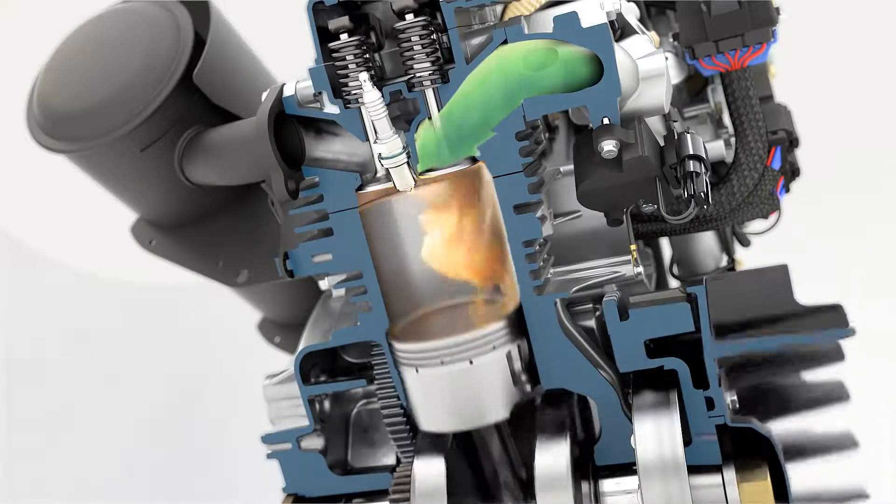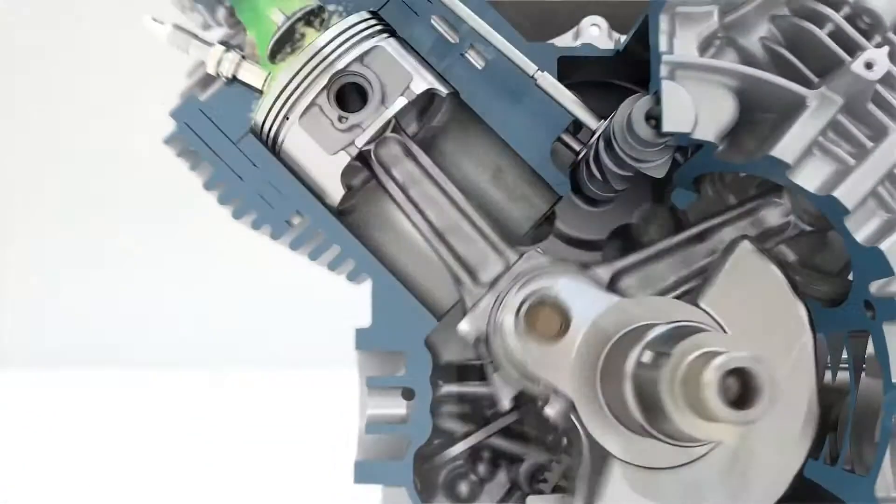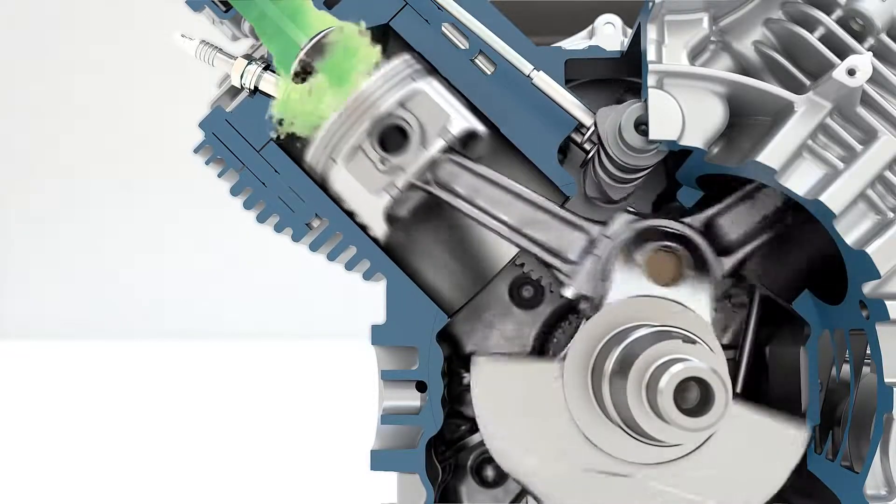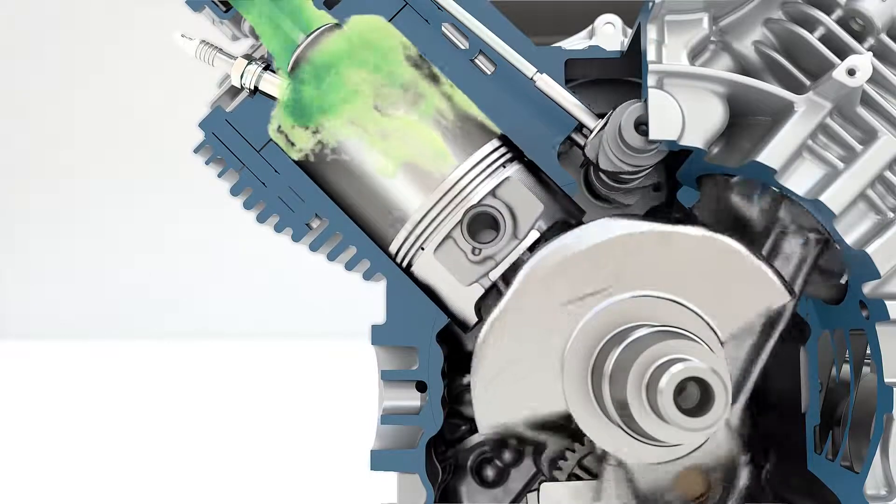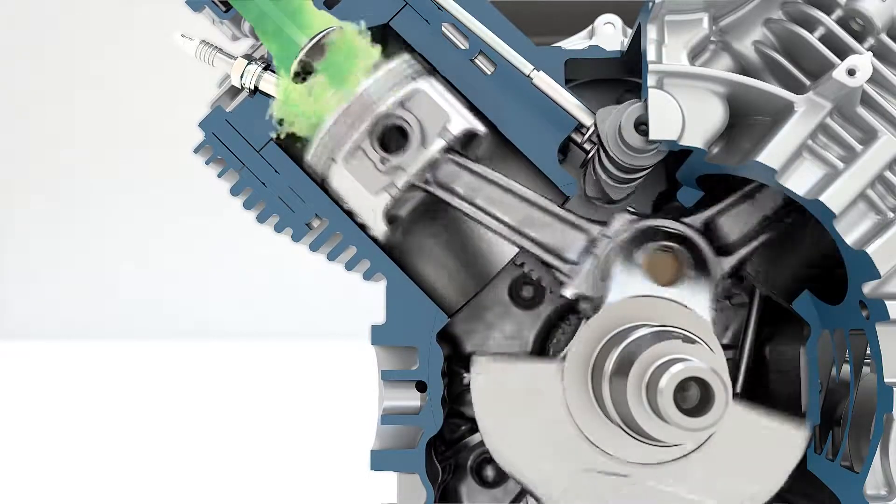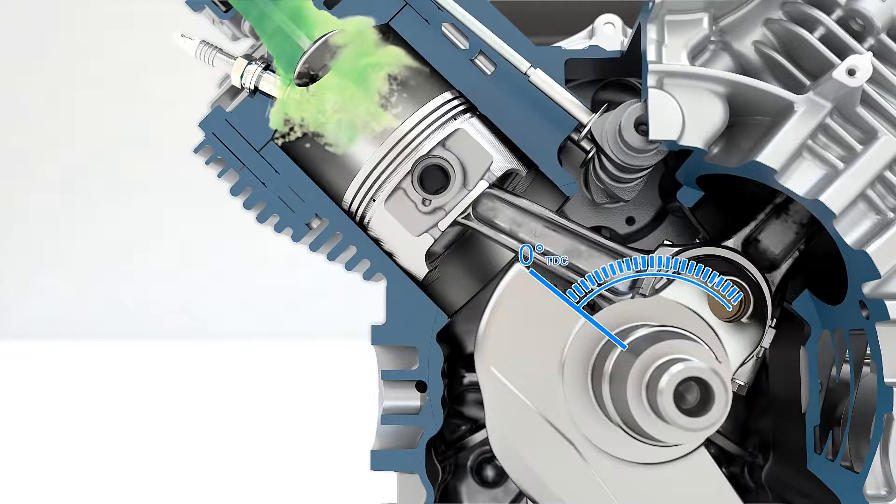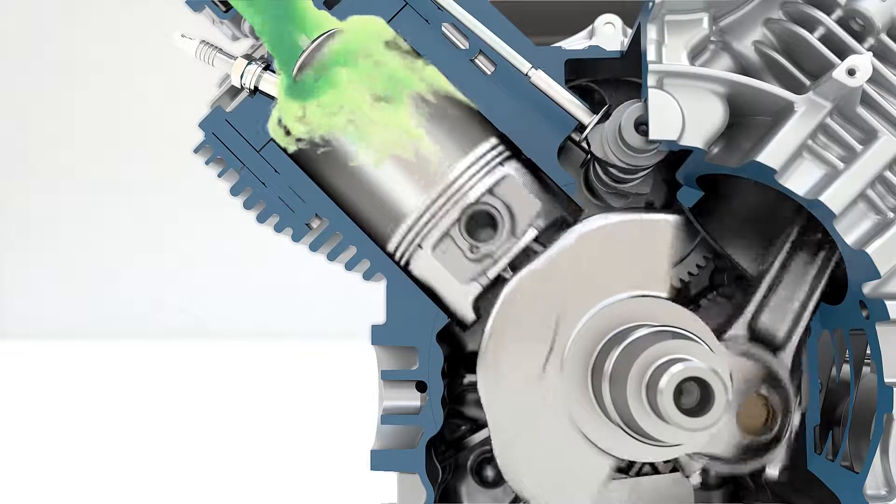Depending upon engine speed and engine load, the spark event may be required to occur much sooner or later in relation to the piston traveling toward top dead center. Variable spark advance is a tool used to always keep the engine producing maximum leverage on the connecting rod and crankshaft, thus making the most torque and efficiency possible.